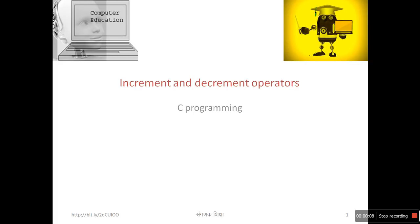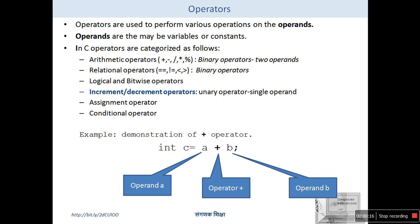Hello, today we discuss about increment and decrement operators in C. Let's start with the introduction of operators. Operators are generally used to perform various operations on different operands. These operands may be variables or constants, and those operations are performed by operators. Operators are treated as functions to perform different kinds of operations in C.